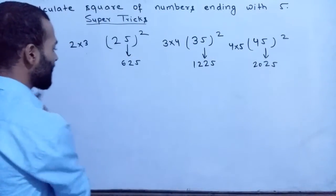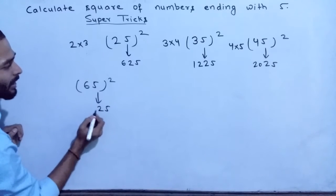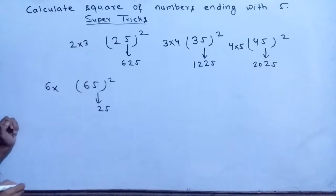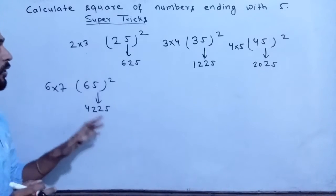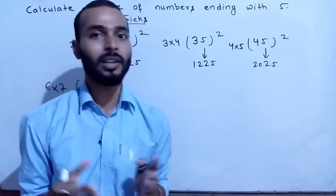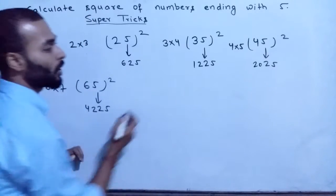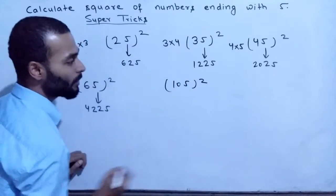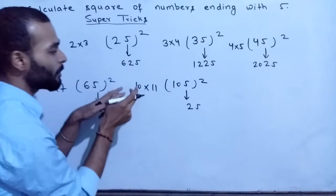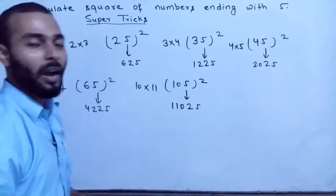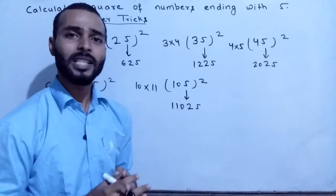Let's take another example: 65 squared. 5 squared is 25, write 6, and the next number after 6 is 7, so 6 times 7 is 42. Therefore 65 squared is 4225. This trick will be very beneficial for you in competitive exams where you cannot use a calculator. For 105 squared: take square of 5 as 25, write 10, the next number is 11, and 10 times 11 is 110. So the square of 105 is 11025. It's very easy and essential for competitive exams.